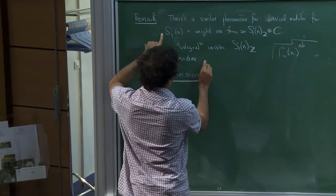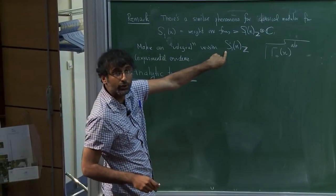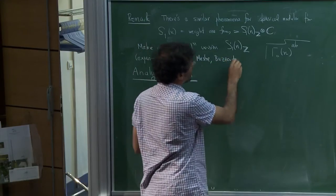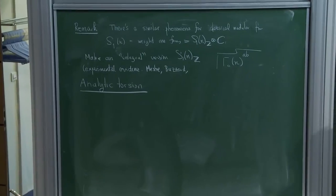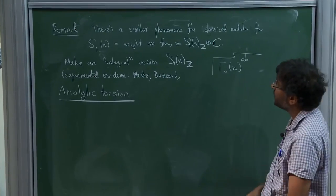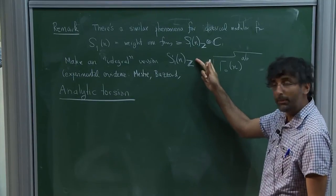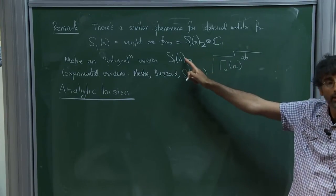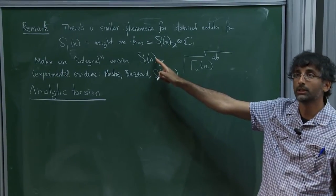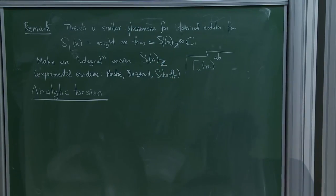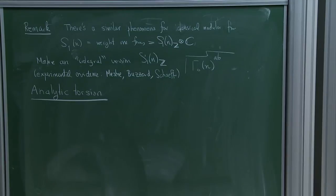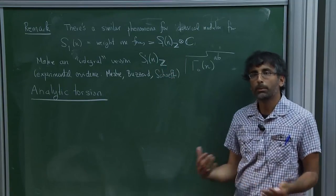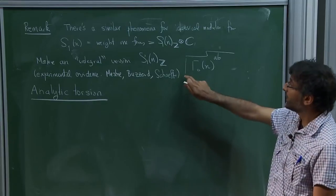This story is much less developed. The first evidence was given by some mod two classes that don't lift, found by Mestrè, and then some more were found by Buzzard, but these were still relatively sporadic. Then on the basis of the analogy I was describing, I had a PhD student, George Schaefer, who I asked to compute this integrally for many n. He found that in fact this really does behave like this: it has a very large torsion component.